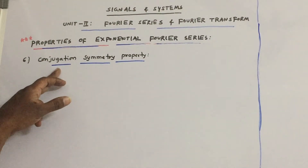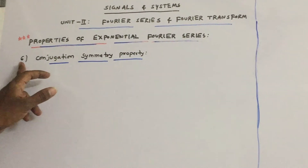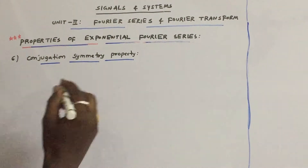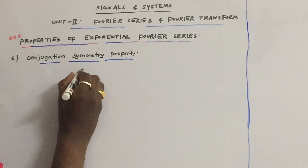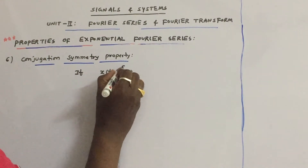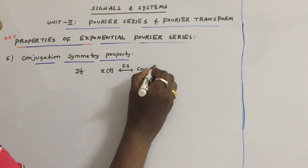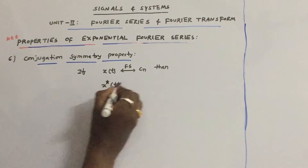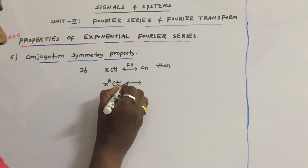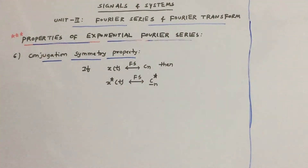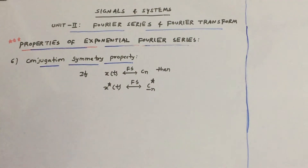Let us discuss the next property of exponential Fourier series: the Conjugation Symmetry Property. If x of t's exponential Fourier series coefficients are cn, then as the name itself indicates, if you take the complex conjugate of x of t, its exponential Fourier series coefficients are c minus n star. Let us prove this property.